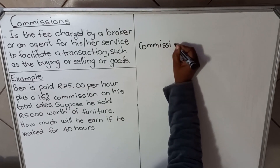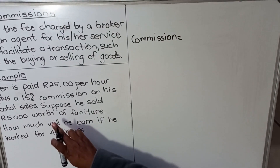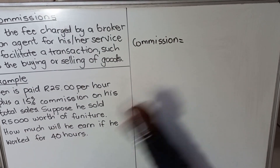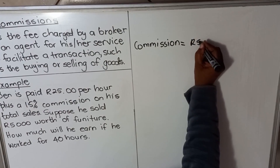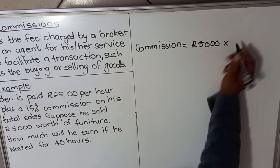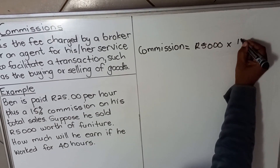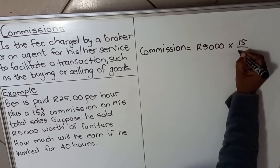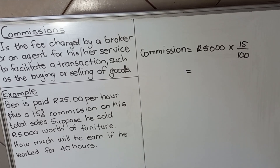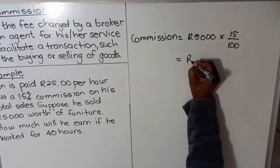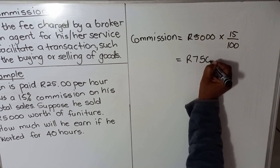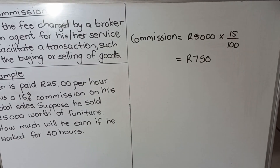The commission is 15% of what he sold. He sold goods worth 5,000, so we calculate 5,000 times 15%, which is 15 over 100. That gives us 750. So he'll get 750 because he sold goods worth 5,000.